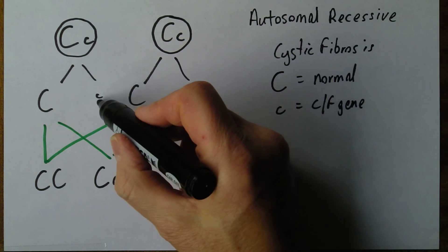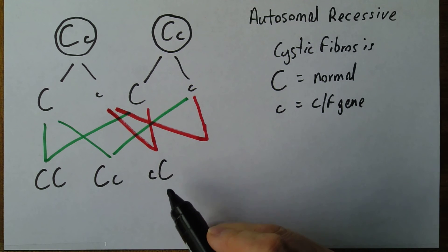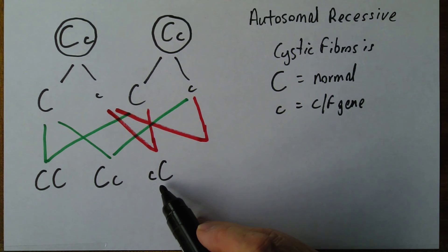In this situation here we have the small c and we have a big C and that's the same. We have a child who is potentially a carrier but phenotypically will be normal. They will not suffer from the condition.